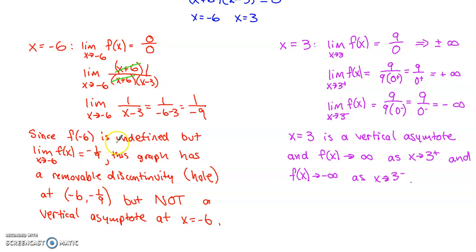Although we're undefined at x = -6, the limit as we approach -6 is -1/9. This graph has a hole, often called a removable discontinuity, at (-6, -1/9), but not a vertical asymptote.